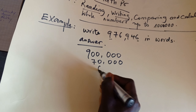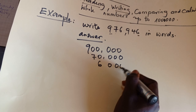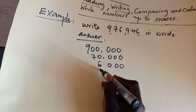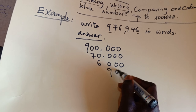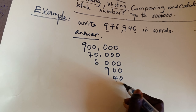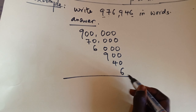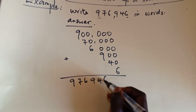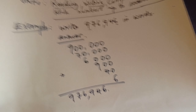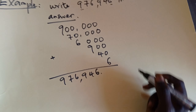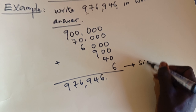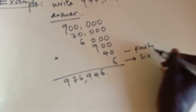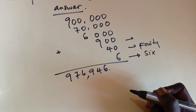Then we put seven here with zeros. Then we put six here with zeros. Then nine here, then two zeros, then four here, then zero, and finally six. When we make addition we get 9, 7, 6, 9, 4, 6 accordingly. In writing in words, six is six, and then we have forty.